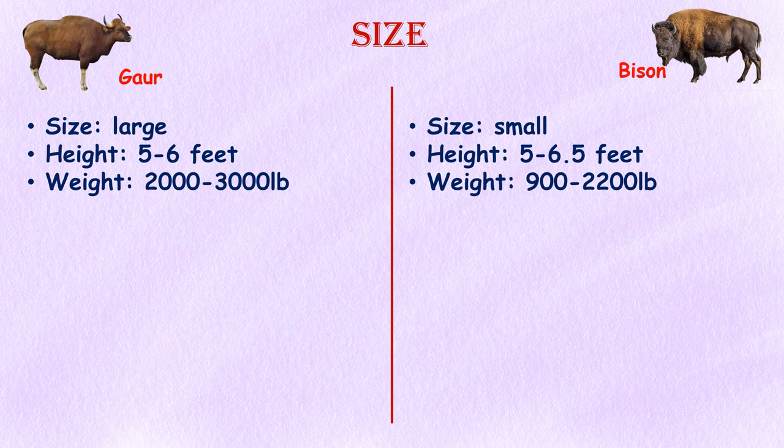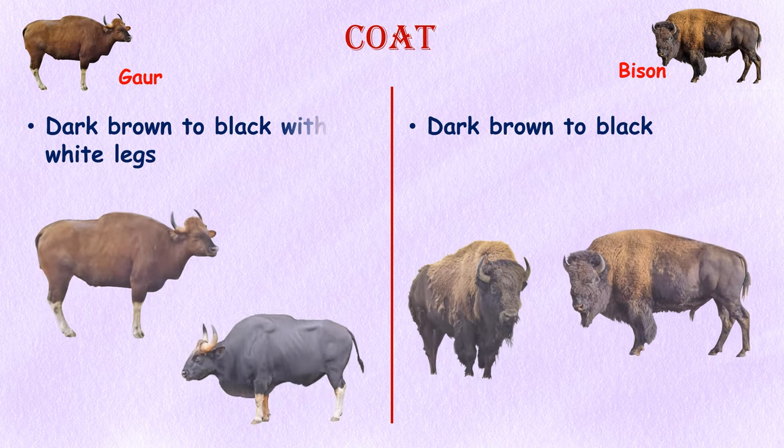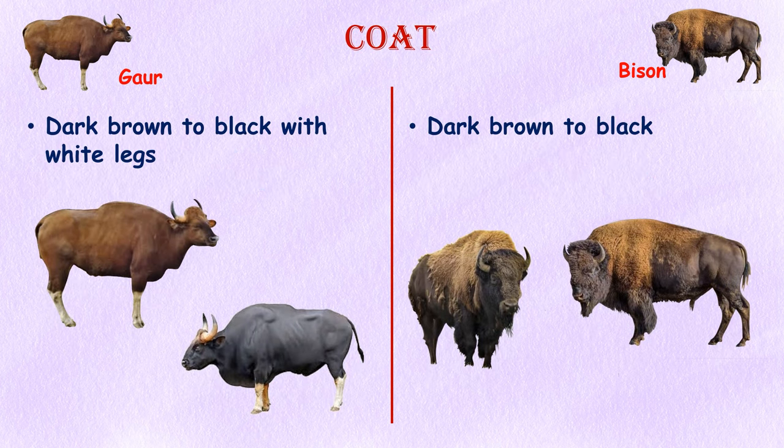Size: The gaur is the largest species of wild cattle. It has a massive body with a height at the shoulder of around five to six feet and can weigh up to 2,000 to 3,000 pounds. The American bison is slightly smaller but still large by bovine standards — it stands around five to six and a half feet tall at the shoulder and weighs between 900 to 2,200 pounds.